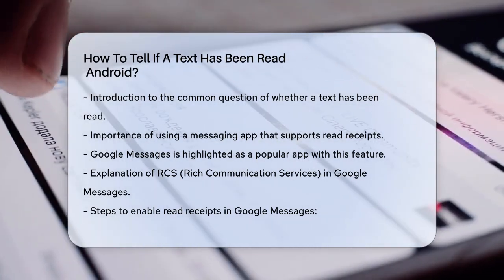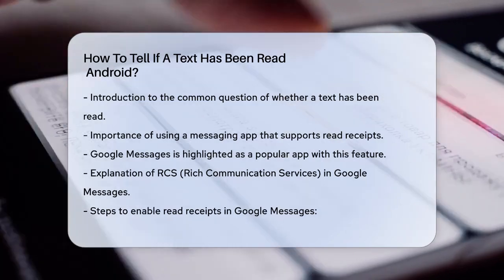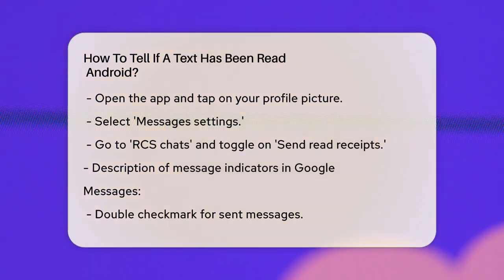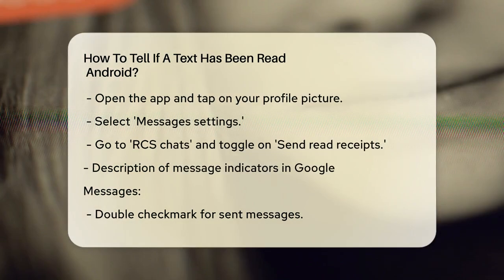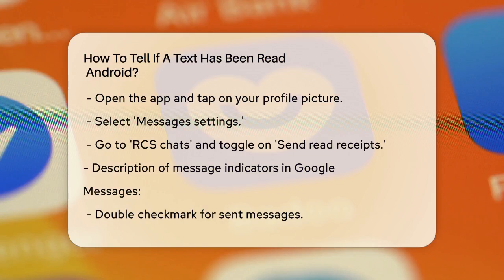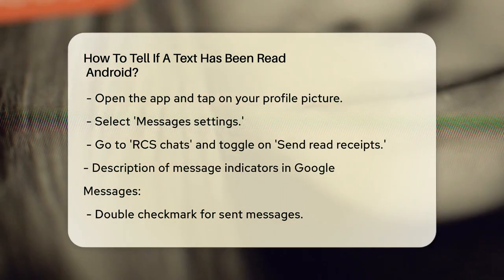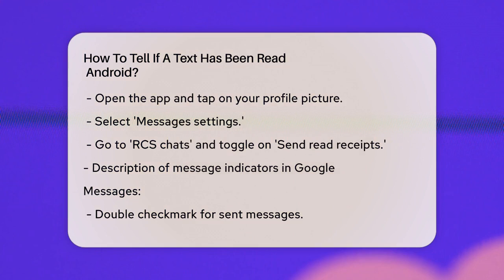To enable read receipts on Google Messages, open the app and tap on your profile picture or the circular account icon in the upper right corner. Then select Messages Settings and go to RCS Chats. Here, you'll need to turn on the Send Read Receipts toggle. This will let others know when you've read their messages, and you'll also be able to see when they've read yours, but only if they have this feature enabled too.